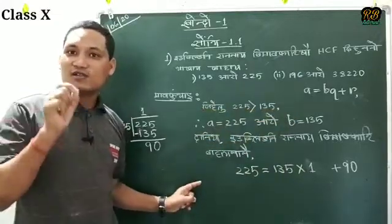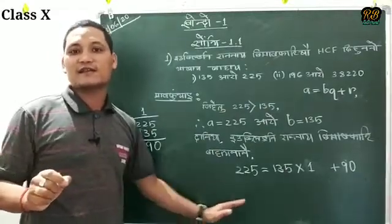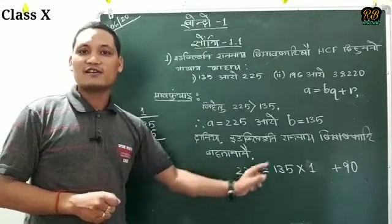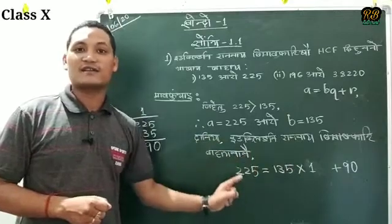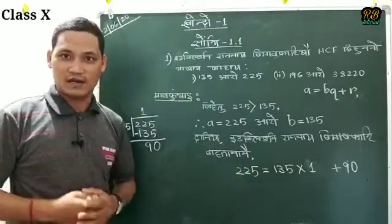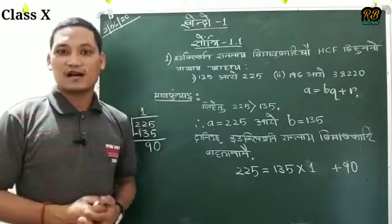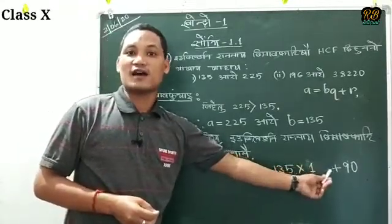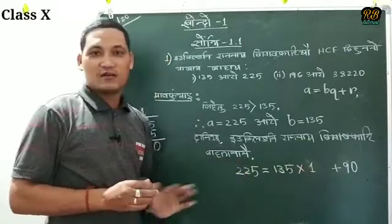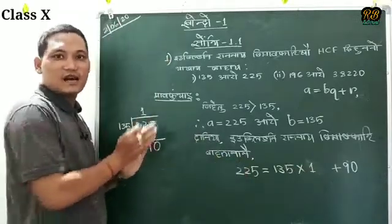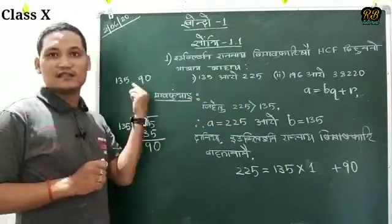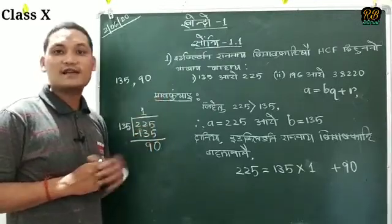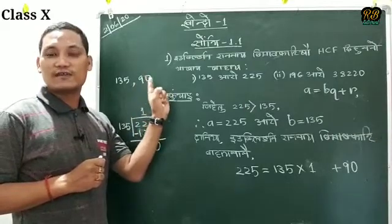Euclid's division algorithm will be done step by step. The next step involves the number 3. The formula of Euclid's name — for example, 135. In the steps, you will notice numbers 3 and 4.